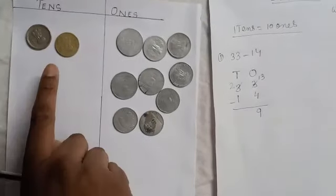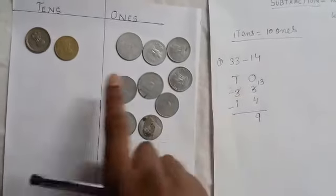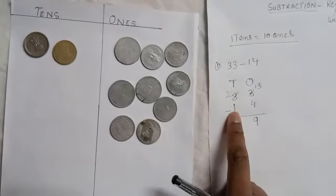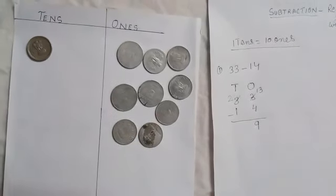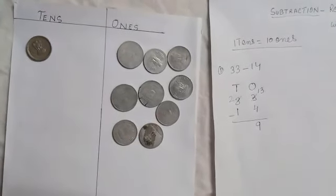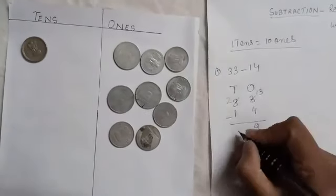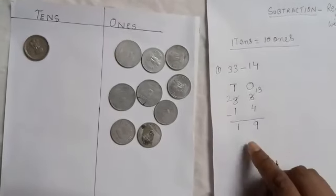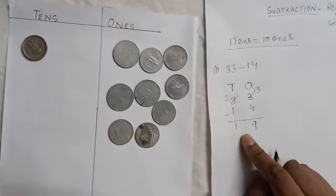Now there are 2 tens. We have to remove 1 ten. We remove 1 ten, so 1 ten is left. So your difference is 19.